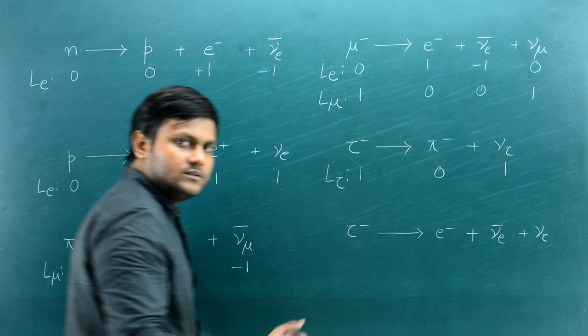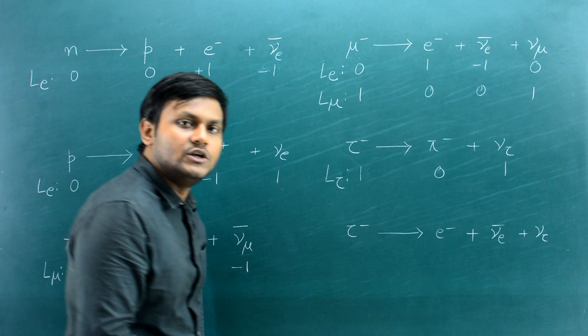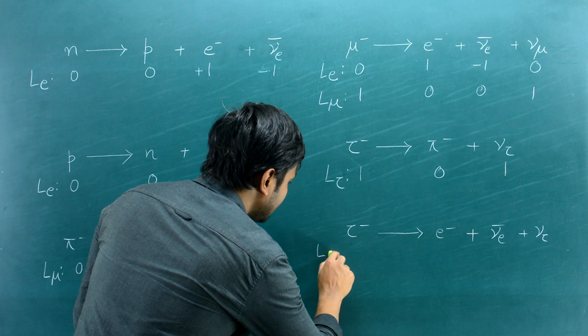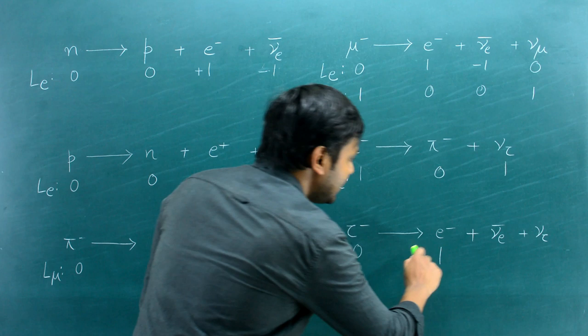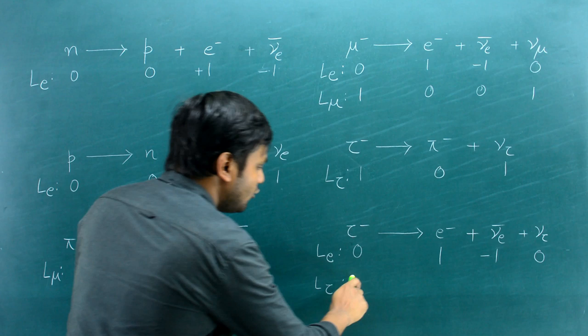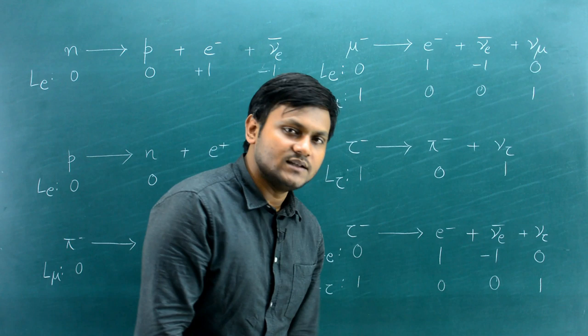The tau particle can also decay into an electron, an electron anti-neutrino, and a tau neutrino. Here we have two families — electrons and tau particles — so we check their conservation separately. For the electron lepton number: tau = 0, electron = +1, electron anti-neutrino = −1, tau neutrino = 0. Conserved. For the tau lepton number: tau = +1, electron = 0, electron anti-neutrino = 0, tau neutrino = +1. Also conserved.